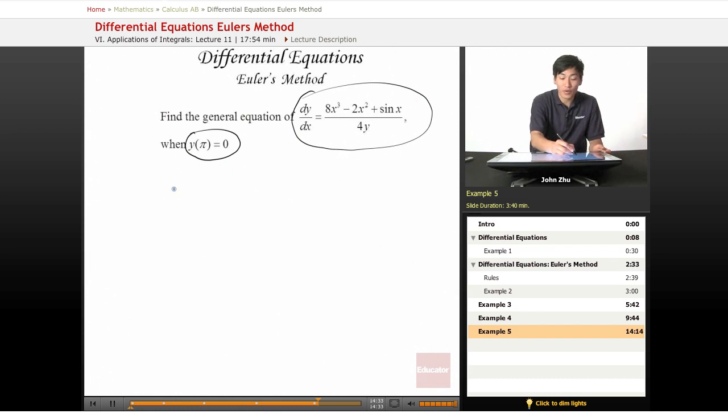So all we have to do is separate the variables first. So we get 4ydy equals 8x cubed minus 2x squared plus sine of x dx. And if we integrate both sides,